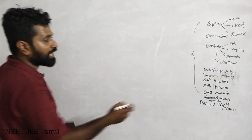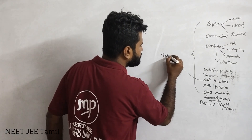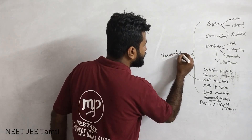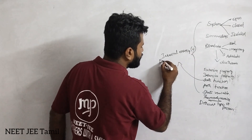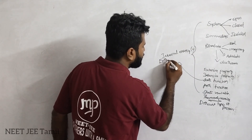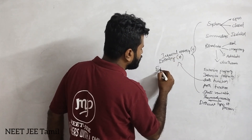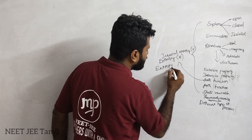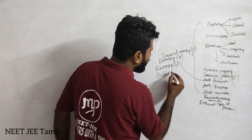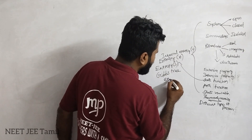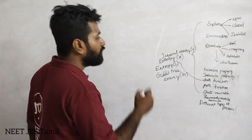State functions: internal energy, represented by U. Enthalpy, represented by H. Entropy, represented by S. Gibbs free energy, represented by G.